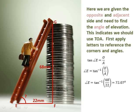Putting the numbers into that equation, we get angle E equals the inverse tan of 68 divided by 22. Performing that calculation on your calculator, you get 72.07 degrees. So the angle of elevation for the ladder is 72.07 degrees.